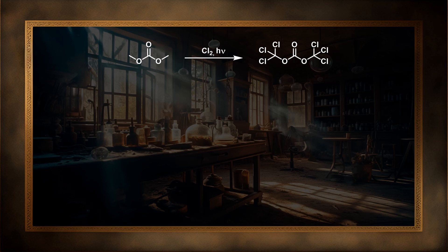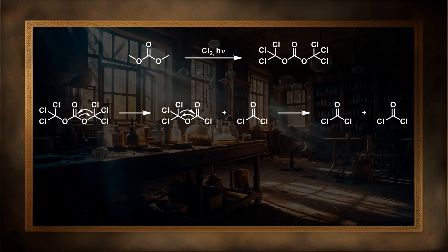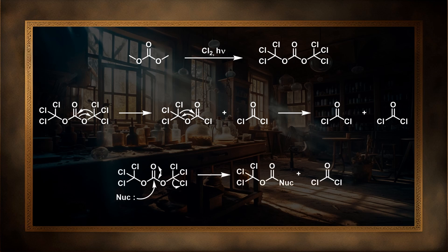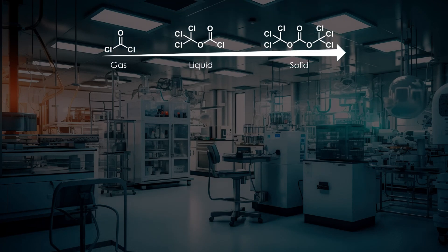At first glance, triphosgene does not appear chemically related to phosgene. However, it can react with moisture or heat to produce three equivalents of phosgene. The trichloromethyl groups are electronically similar to the chlorine atoms in phosgene and can act as leaving groups which produce an equivalent of phosgene. Unlike phosgene, which is a gas, or diphosgene, which is a liquid, triphosgene is a crystallised solid, making it easier and safer to handle, and lending itself to use as a phosgene substitute.